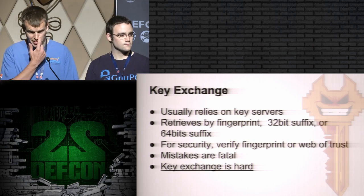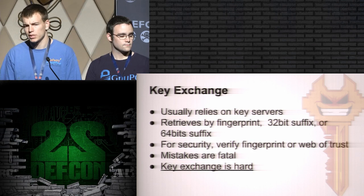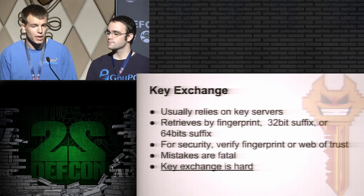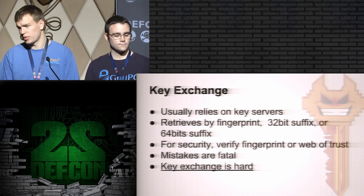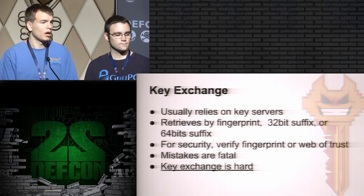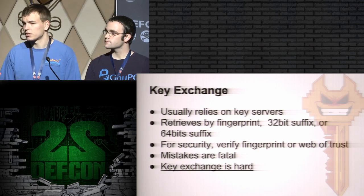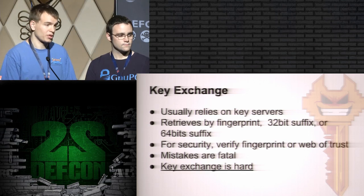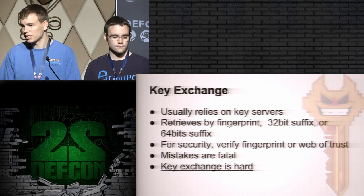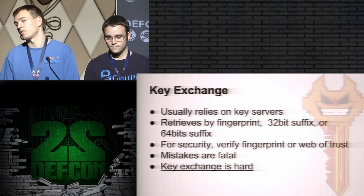In order to exchange a secret message, you must get the receiver's key, and this is normally done via the GPG key servers. When you specify a unique key on the GPG key servers, you specify either a full fingerprint, a 32-bit ID, or a 64-bit ID. Once you receive the key, you verify that it's the key you think it is. One way is to manually check the fingerprint character by character, and the other way is to use the web of trust. The big problem is that mistakes are fatal — if you trust a key that you shouldn't be trusting, there's no recourse.